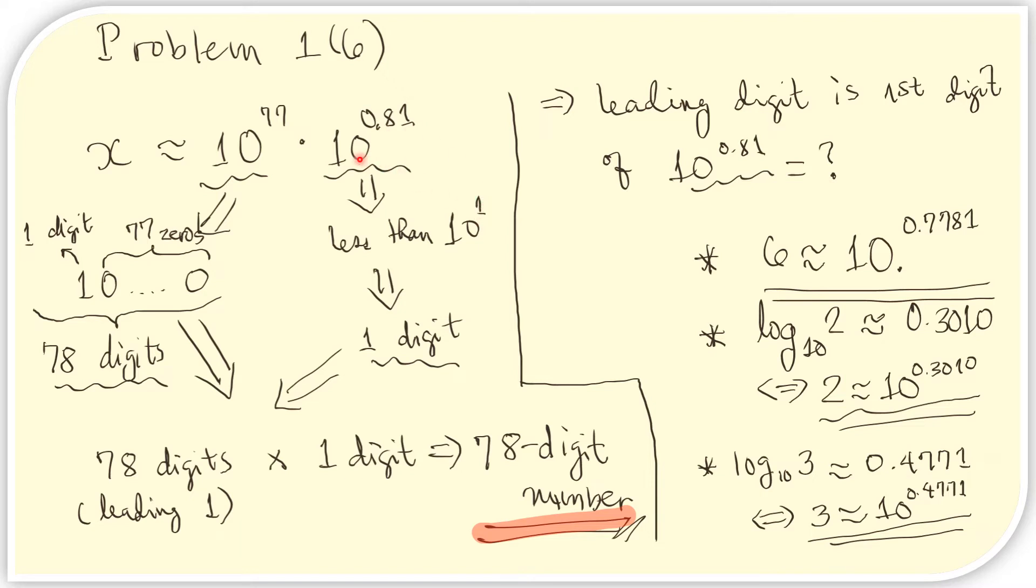And we also know that because of that, this number must only have one leading digit that is before the decimal point. And if we multiply that number with this number here, we know that the result will still be 78 digits. And the leading digit here is the same as the first digit here, which is the number before the decimal point. So for these two facts, we know that the number of digits for x is 78.